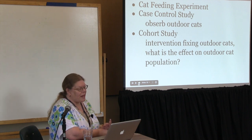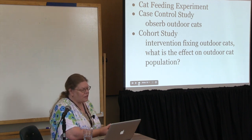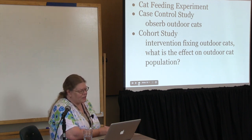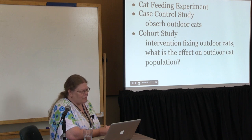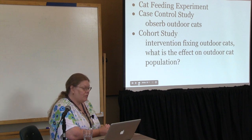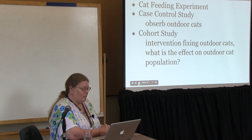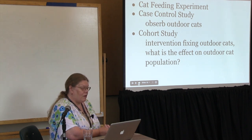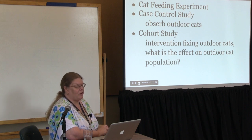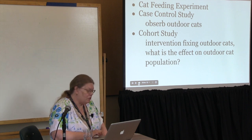I'm going to do three example studies. One is a cat feeding experiment. One is a case control study observing outdoor cats. And one is a cohort study where I do an intervention of fixing outdoor cats and ask the question: what is the effect of fixing them on outdoor cat population?